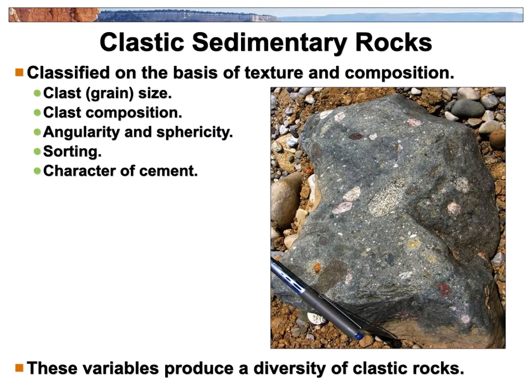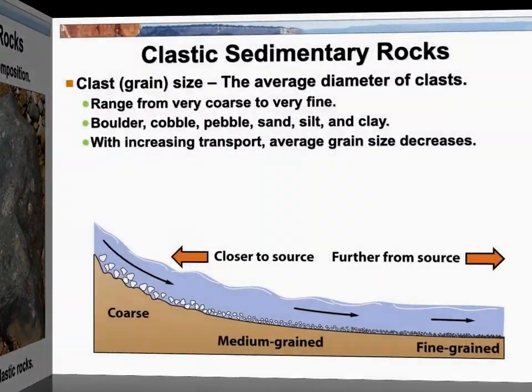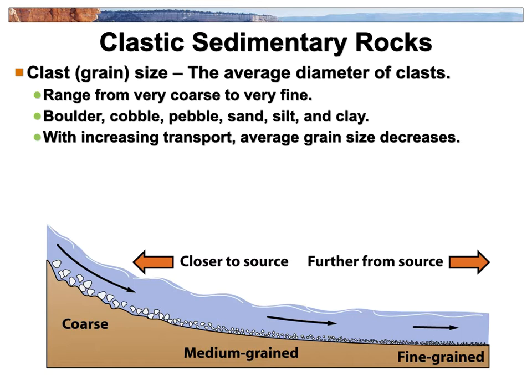We classify sedimentary rocks based on: how big are the chunks — the clasts — in them; how angular or spherical the clasts are, whether they're sharp and pointy or rounded; how well sorted they are; and what's gluing them together. If there are larger rounded pebbles in a rock that's not super well-sorted, we would probably call it a conglomerate because they're rounded — see how they're rounded little pebbles in there?